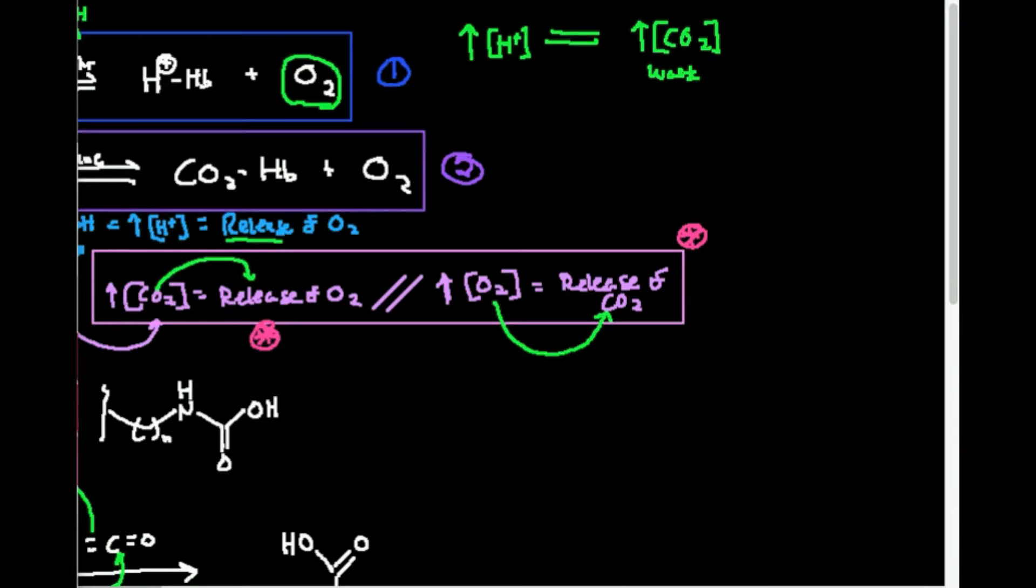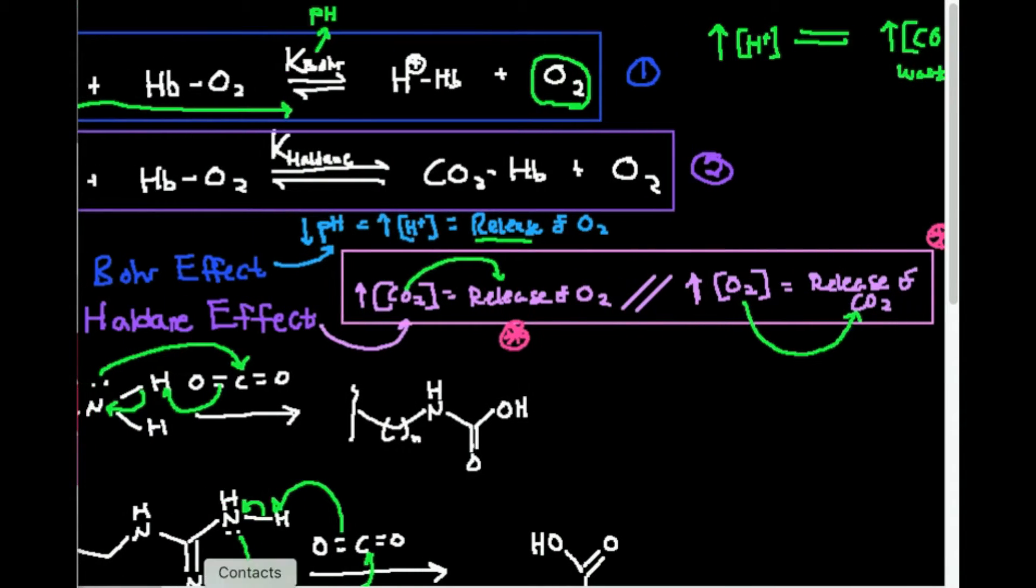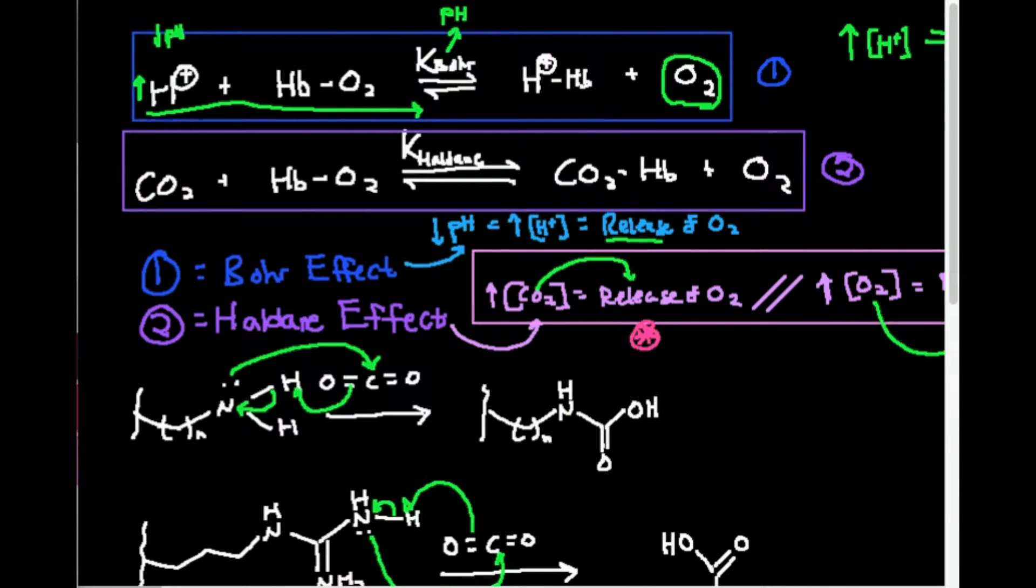So essentially why this is different is, yes, we know from the Bohr effect that hydrogen ions intrinsically cause the release of oxygen. But oxygen does not intrinsically cause the release of the proton. We can't just bind oxygen and protons will leave because the proton binding is dependent on the pH. That's a property of the solution, not of hemoglobin.